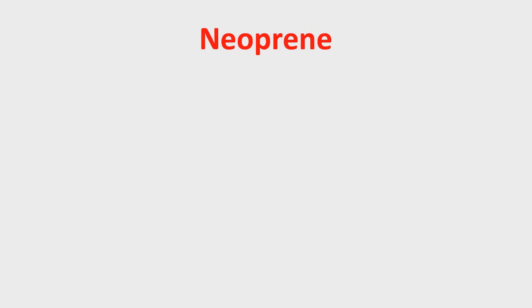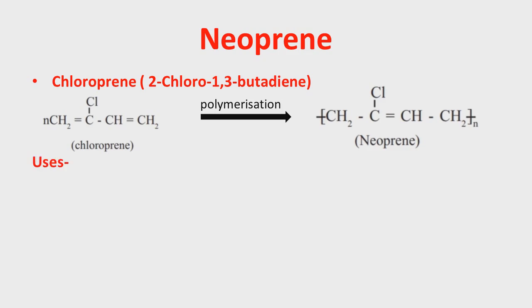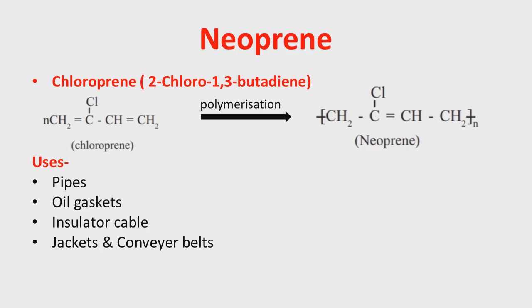Another example of synthetic rubber is neoprene. The monomer of neoprene is called chloroprene, also known as 2-chloro-1,3-butadiene. On polymerization, the double bonds break and extend into a chain, with a new double bond forming between other carbon atoms, giving the structure of neoprene, also called polychloroprene. Neoprene is used in making pipes for transport of gasoline, oil gaskets, insulator covers, jackets, and conveyor belts.